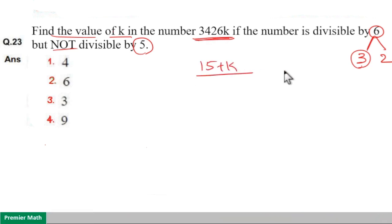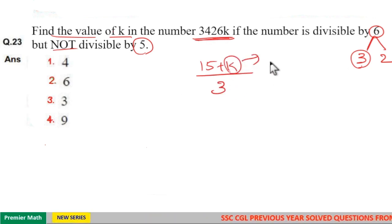So 15 plus k should be divisible by 3. Here 15 is divisible by 3, which means k is divisible by 3. So k can be 3, 6, or 9, but this number should be divisible by 2 as well.